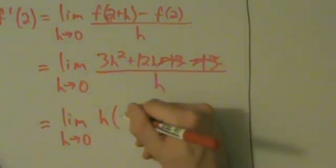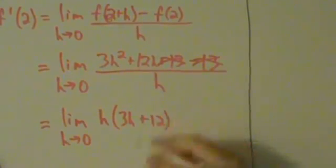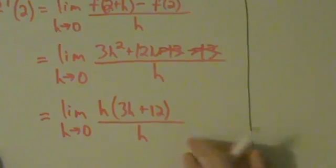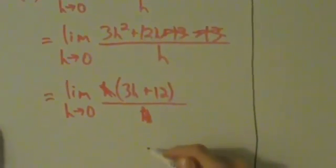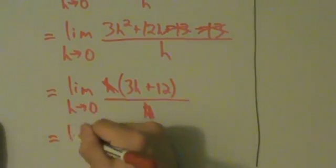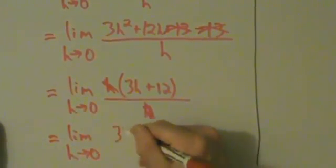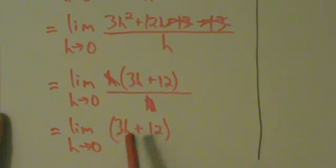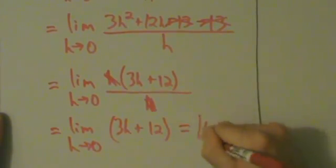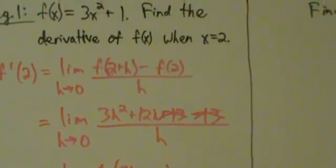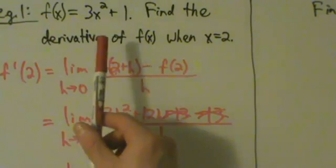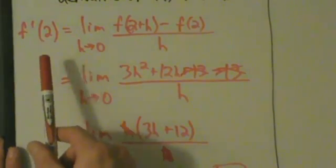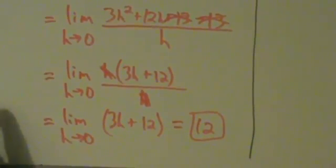Now we have 3h squared plus 12h all divided by h. Pulling out a factor of h, we're left with 3h plus 12. The h's cancel, and we have the limit as h goes to 0 of 3h plus 12. By direct substitution, that's 3 times 0 plus 12, which equals 12. So the derivative of f of x when x equals 2 is 12, meaning f prime of 2 equals 12.